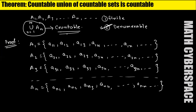Now our aim is to prove that this union is countable. That means we have to find a one-to-one correspondence between the union set and the natural numbers. We have to form this union set — how can we do this? I will arrange the elements in such a way that they form a one-to-one correspondence with the natural numbers.